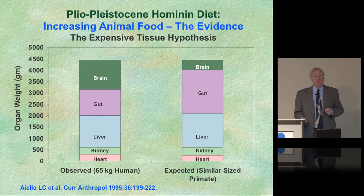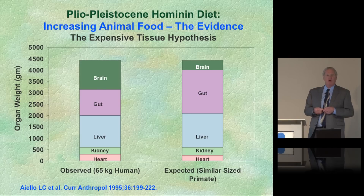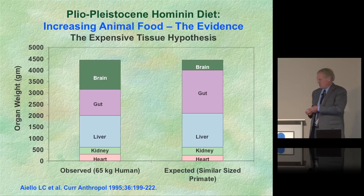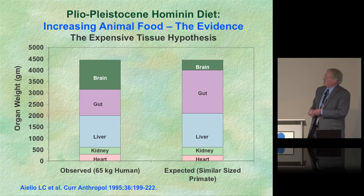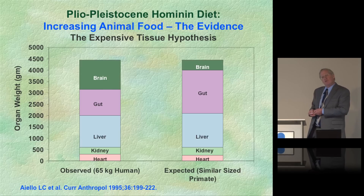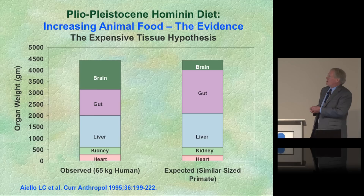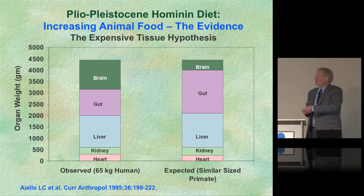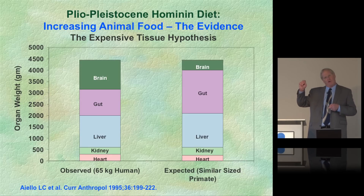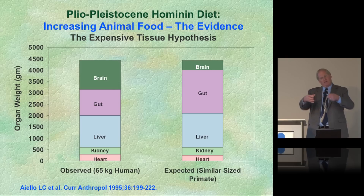Here's another intriguing bit of evidence: the expensive tissue hypothesis, developed by my colleague Leslie Aiello at University College London, published in 1995. If we look at our brain size contrasted with our gut size, we have an incredibly large brain and a very small gut. Compared to all other primates at our body weight, we should have a very large gut and a small brain — but we don't.